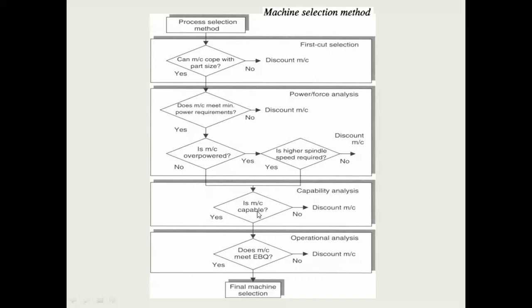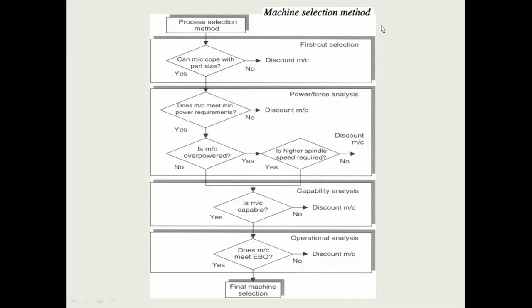In capability analysis, we check whether the machine is capable for the particular operation. If yes, we proceed to operational analysis: does the machine meet the economic batch quantity — can you produce a batch quantity economically? If so, that machine is selected. This is a simple layout diagram for the machine selection method. Tool selection method will be discussed in the next class.